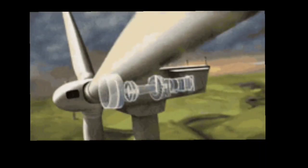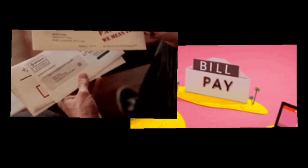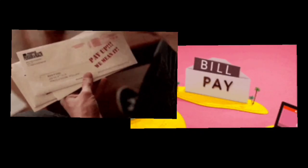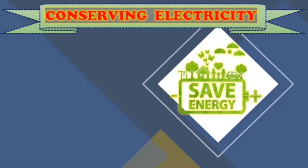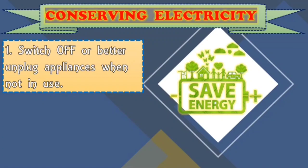We all know that electricity is a form of energy and energy can be derived from a lot of sources. But why do we experience energy shortage? So every month, class, our parents pay an electric bill which corresponds to the electricity we consume in a month. So in this topic, we will know that saving energy is saving Mother Earth. So here are some pieces of advice on how to conserve electricity. Number one is switch off or better unplug appliances when not in use — kung maraming naka-plug na appliances na hindi naman ginagamit, so better switch it off or unplug them.